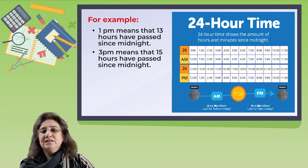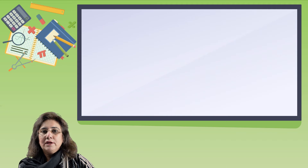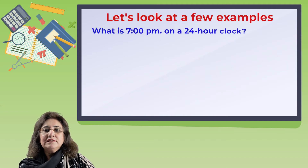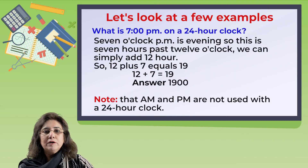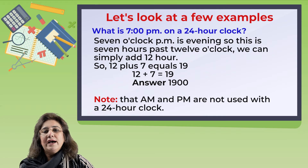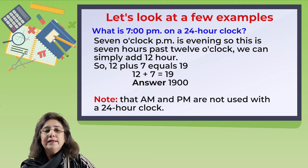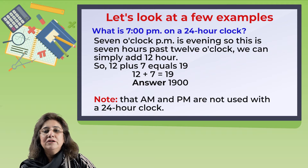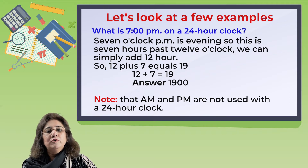Let's look at a few examples. What is 7 PM on a 24-hour clock? 7 o'clock PM is evening, so this is 7 hours past 12 o'clock. We can simply add 12 hours: 12 plus 7 equals 19. The answer is 1900. Note that AM and PM are not used with a 24-hour clock.